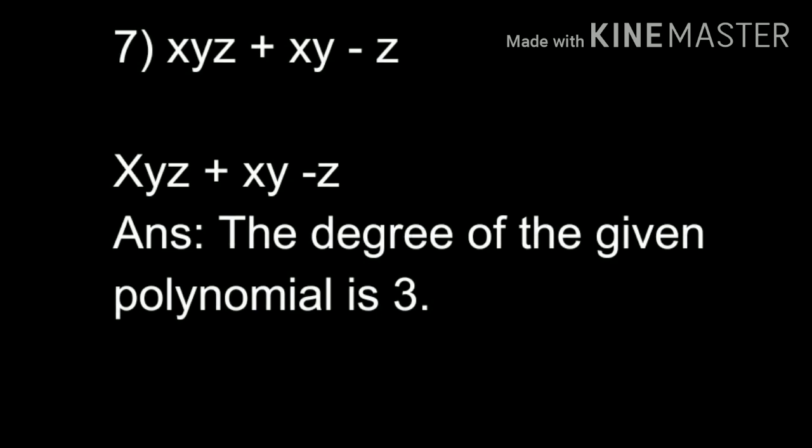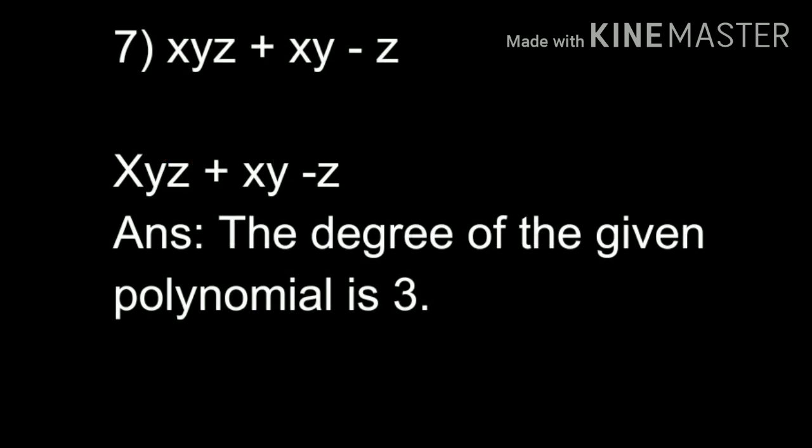Question 7: xyz + xy - z. The index is not explicitly given, but the power of x is 1, y is 1, and z is 1, so xyz has index 1+1+1 = 3. For xy, the index is 1+1 = 2. For z, the index is 1. The greatest is 3, so 3 is the degree of this polynomial.